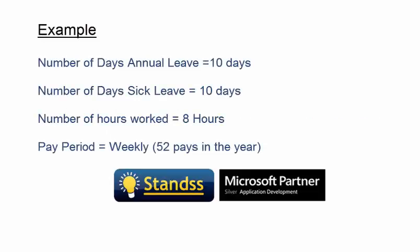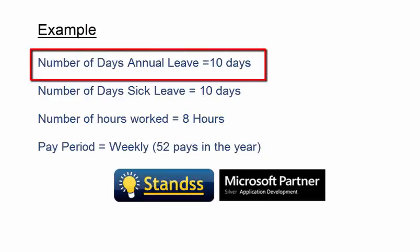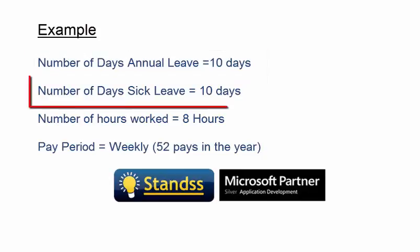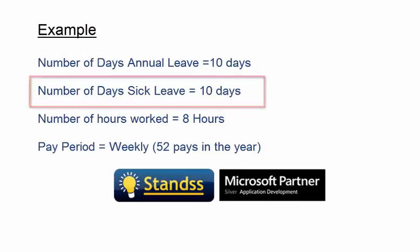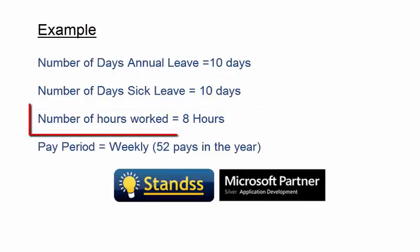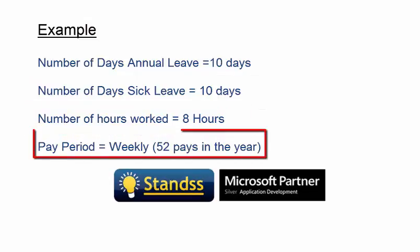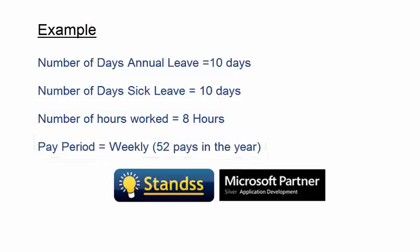In this example, an employee is entitled to 10 days annual leave and 10 days sick leave. The employee works 8 hours a day and is paid weekly — that is, they get paid 52 times a year. Let's set this up in Paymaker.